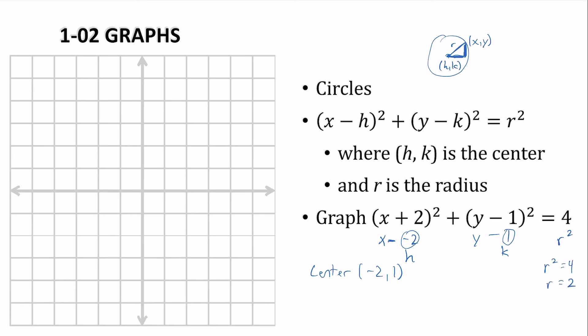And then the 4 is the r-squared. So if r-squared is 4, then r would be 2. So we start at negative 2, 1, that's our center. And we go the radius each direction. So I go over 2, up 2, left 2, down 2, and draw a nice circle.